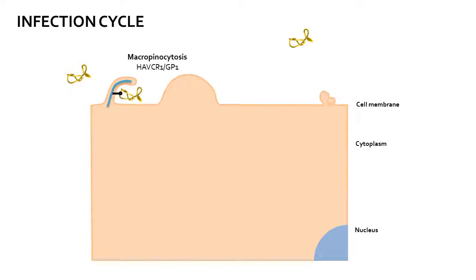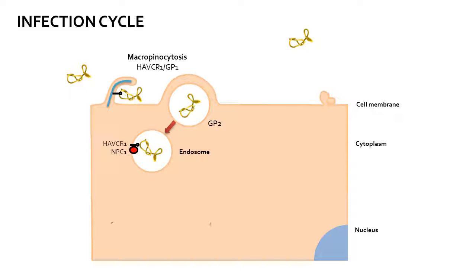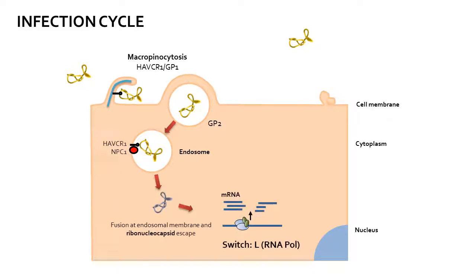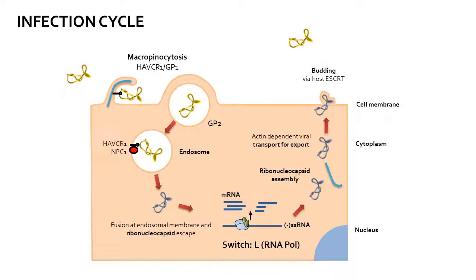The binding causes macropinocytosis as a result of cellular cytoskeletal reorganization. The virus then escapes the late endosome, losing its phospholipid envelope, produces positive sense messenger RNA using the RNA polymerase, replicates its genome while translating early and late proteins, assembles the ribonucleoprotein capsid, and undergoes budding via the host ESCRT machinery.